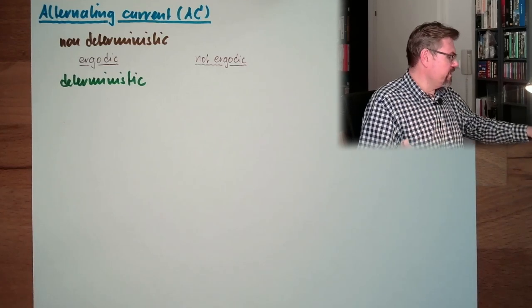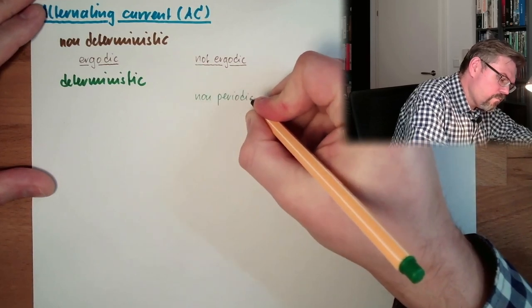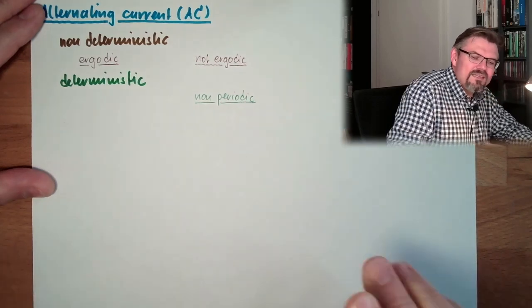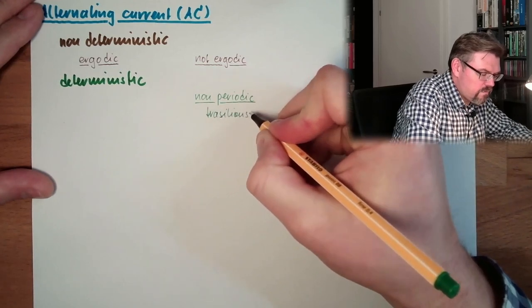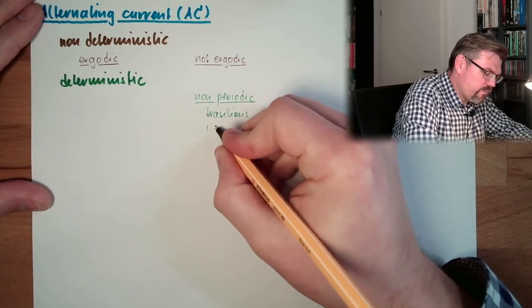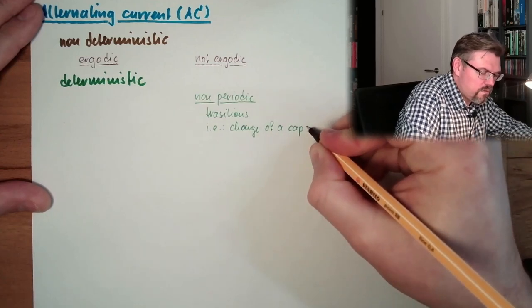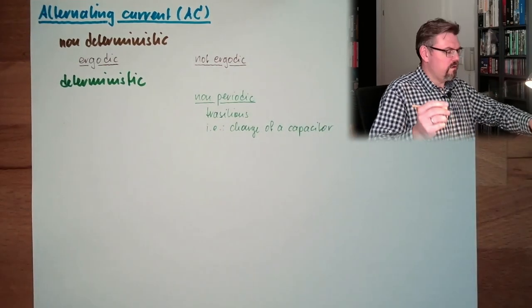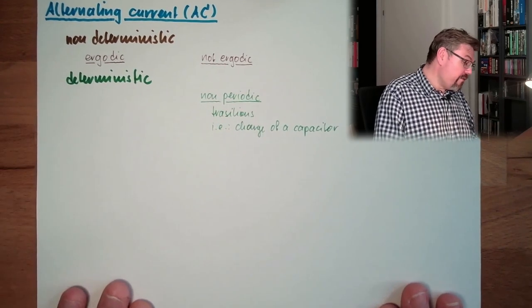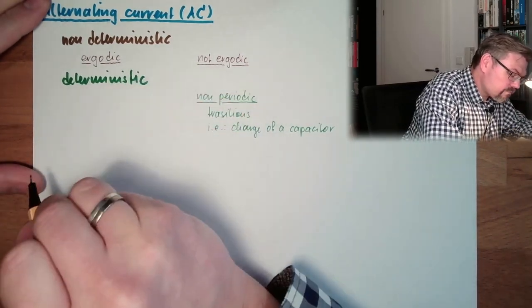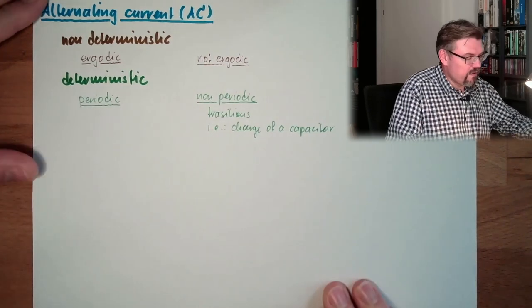What I mentioned first, these are non-periodic signals. Non-periodic signals, these are transitions. For example, as mentioned, charge of a capacitor. This would be a typical deterministic signal. So I already wrote here non-periodic, so there are also periodic signals.